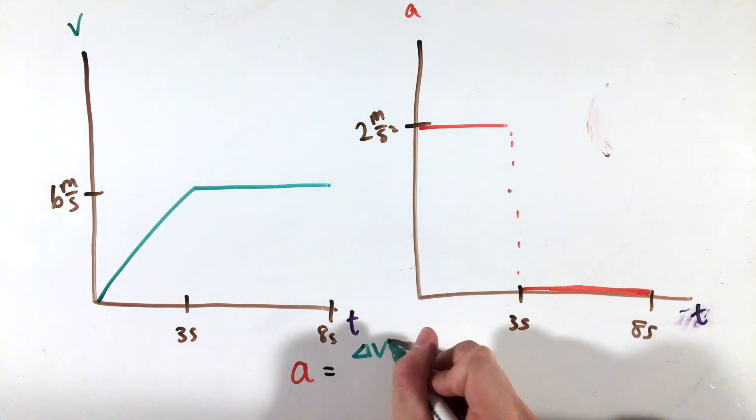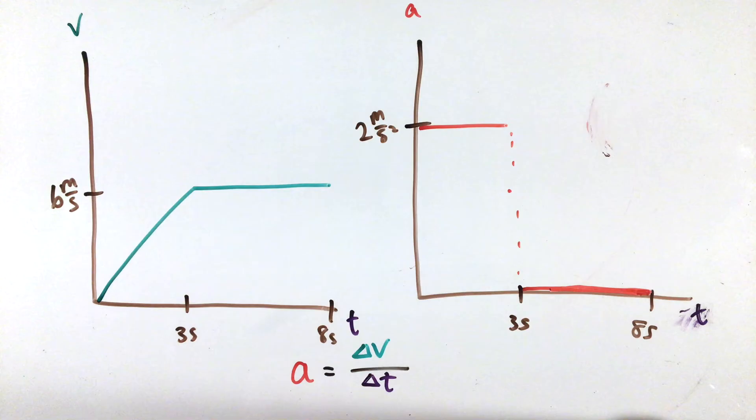Another great way to check if your process is correct is that all acceleration graphs, because we only consider uniform acceleration, should consist only of horizontal lines at different values.